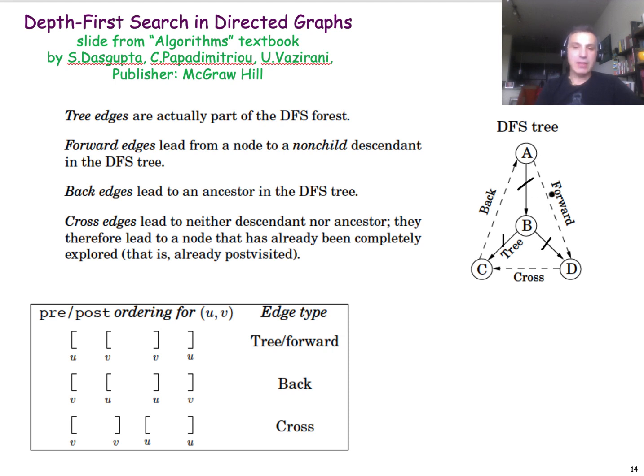There are edges that are not in the DFS tree, and they point from a node to a descendant of that node in the DFS tree that is not a child of that node. So the edge from A to D is a forward edge because it points from A to a descendant of that node in the DFS tree that is not a child of A.